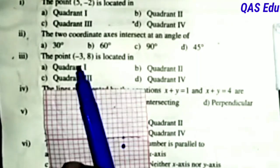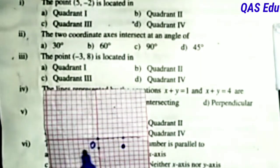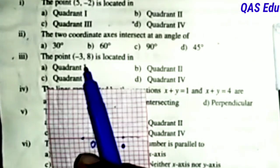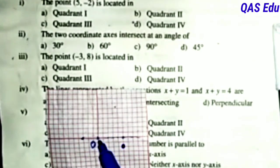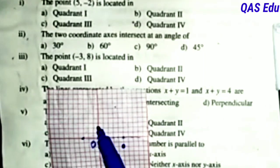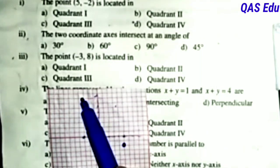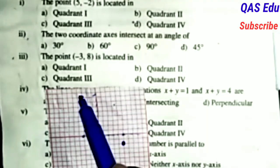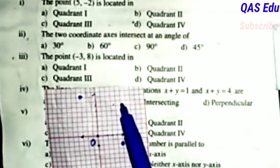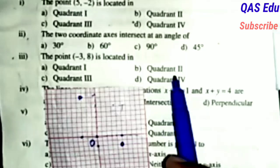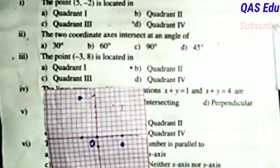Question number 3: The point (-3, 8). -3 is along x-axis. The x-axis has positive and negative values. -3 means 1, 2, 3 in the negative direction. Y has positive values: 1, 2, 3, 4, 5, 6, 7, 8. The point (-3, 8) is in the 2nd quadrant. The correct option is B.